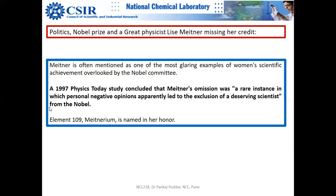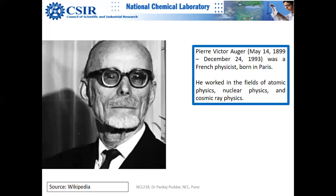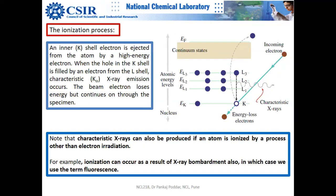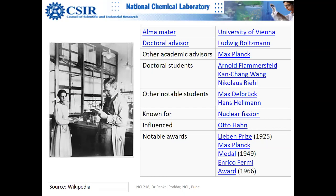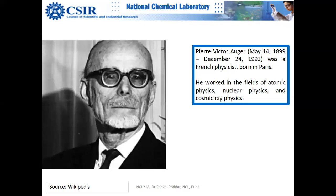Meitner is often mentioned as one of the most glaring examples of a woman's scientific achievement overlooked by the Nobel Committee. Physics Today concluded that Meitner's omission was a rare instance where a personal negative opinion caused a scientist to miss the Nobel Prize. Whenever you look at the periodic table, pay gratitude to element number 109, which is named in her honor. The professor also criticizes Pierre Auger for not speaking up and crediting Meitner when the effect was named after him.